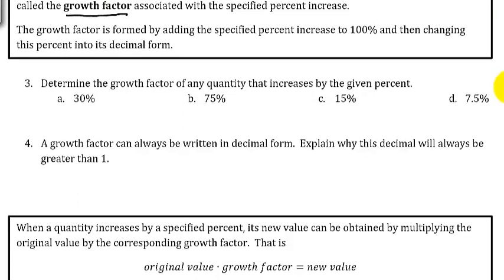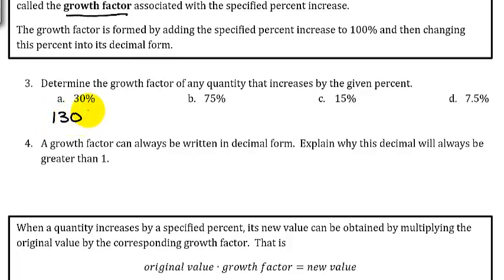Now let's determine the growth factor for several percent increases. For 30%, we add 100 to get 130%, then convert to a decimal. 130% as a decimal is 1.3.